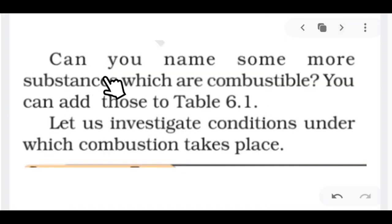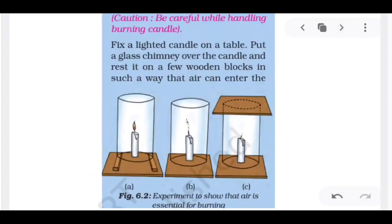But can you name some more substances which are combustible? You can add those to table number 6. Here we have not added plastics. Then polythene is coming from plastic, it is also combustible. So there are many things that are combustible. Now let us investigate conditions under which combustion takes place. So now we have to come here. How do we believe that it is combustible?